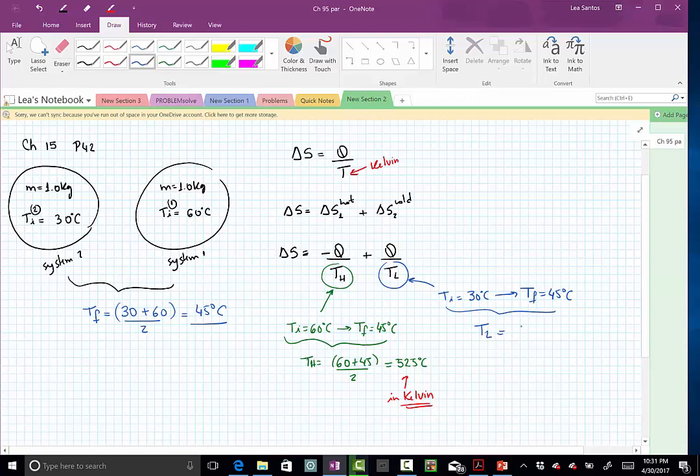So, that will be 30 plus 45 divided by 2. Here, we will get 37, 37.5 degrees. And again, careful, we have to enter this in the equation above in Kelvin.